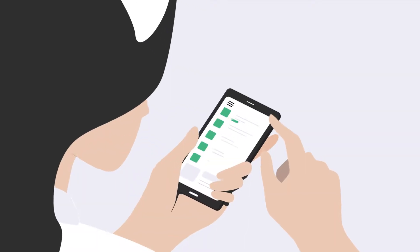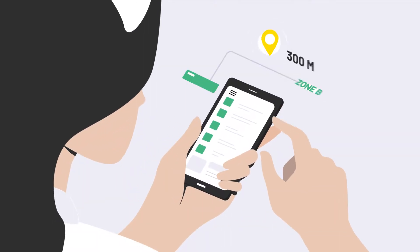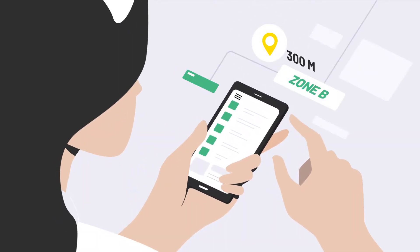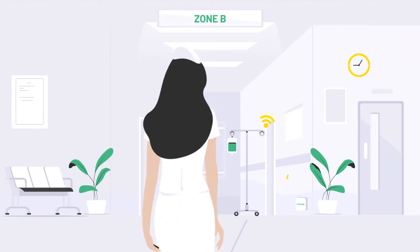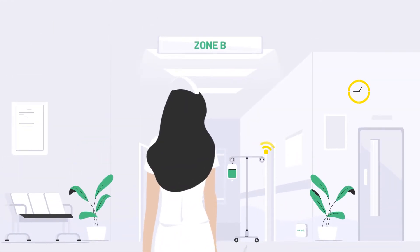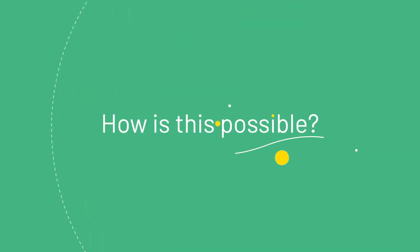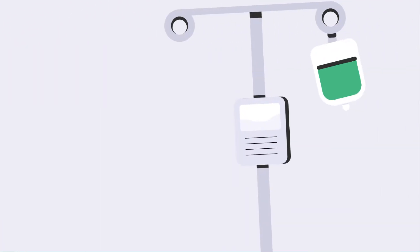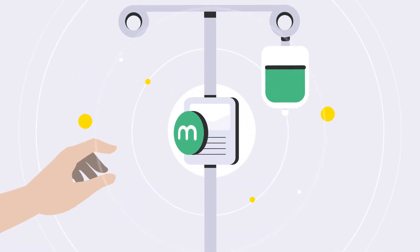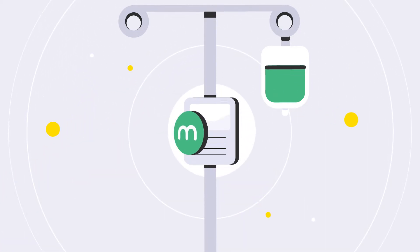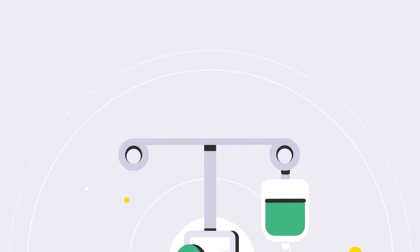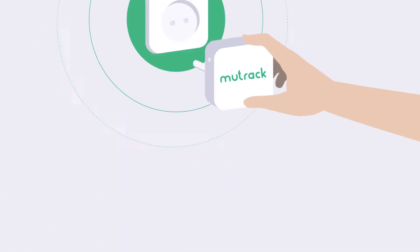Where can I get an infusion pump? The infusion pump is on this floor, Zone B. How is this possible? Step 1: begin by attaching a beacon tag to the device you want to track.